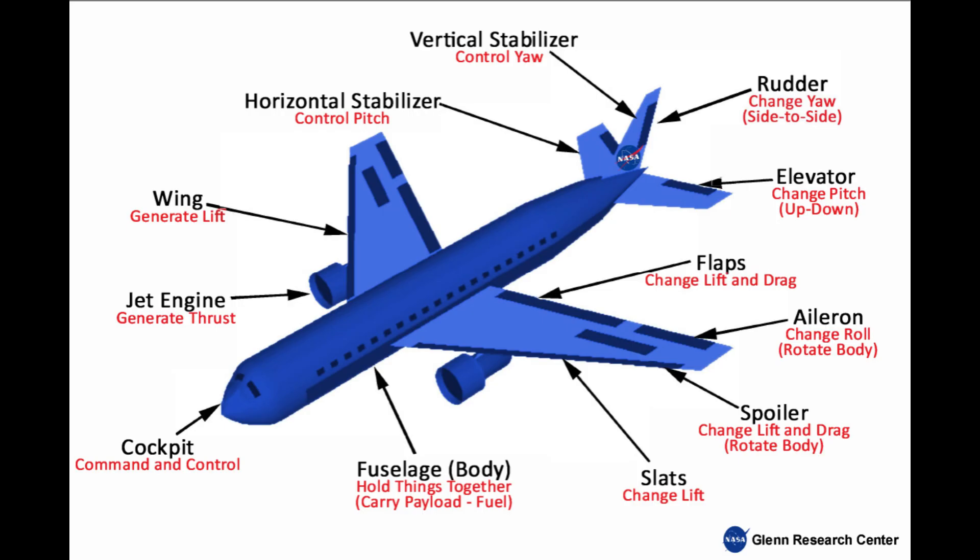Wings: the wings generate lift, which is what keeps the airplane in the air. They're shaped to push air down and lift the plane up. Most also have flaps and ailerons to help with control.